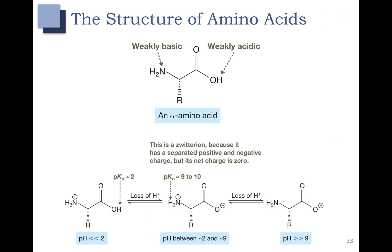Let's use what we've learned about pH and pKa to talk about the structure of amino acids. Here we have an alpha amino acid with a carboxylic acid on the right and an amine on the left, and the R group can be many different things. The structure of the amino acid depends on the pH of the solution. The carboxylic acid has a pKa of about 2, and the pKa of the ammonium is about 9 to 10.